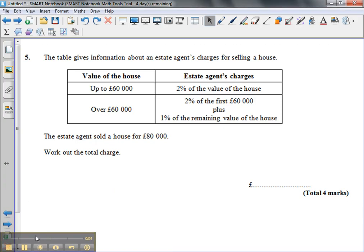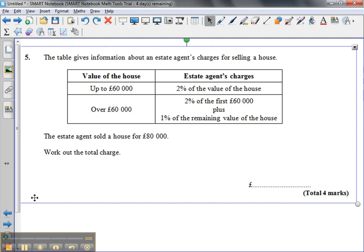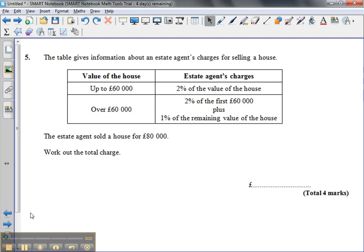Okay, so here we are. We've got question 5, which is another percentages question. This time we're going to work out how much the estate agent gets, how much the total charge is. Now we know that the house sells for 80,000 pounds, so we're going to have to use both parts of this table.